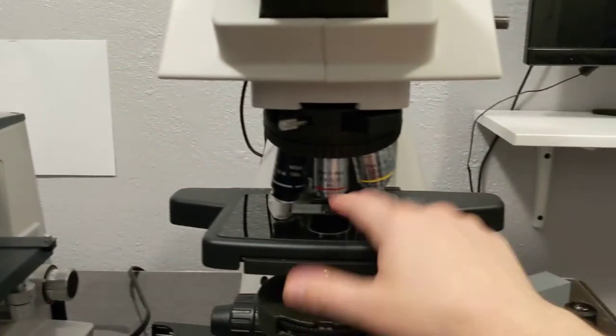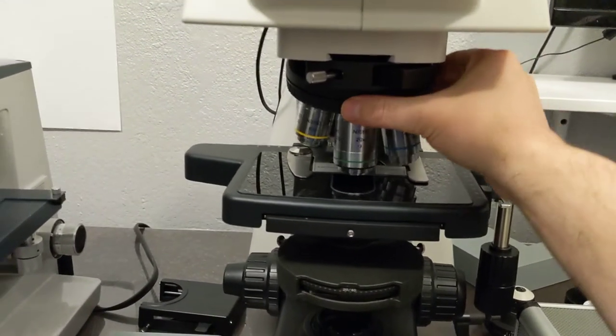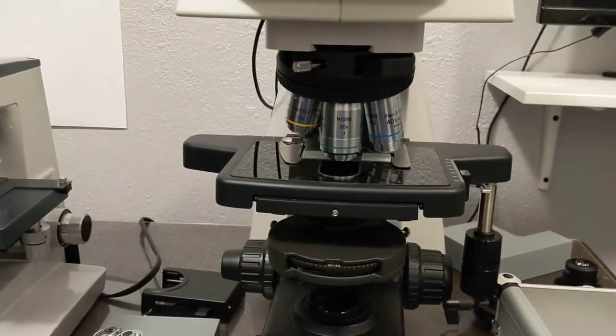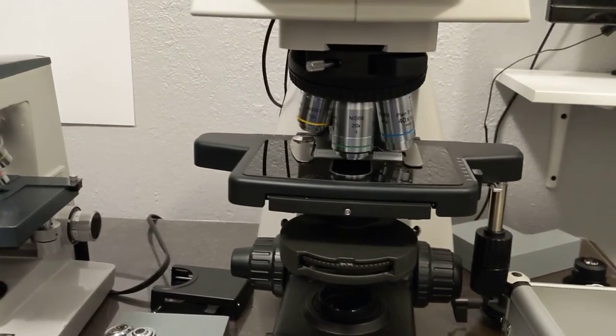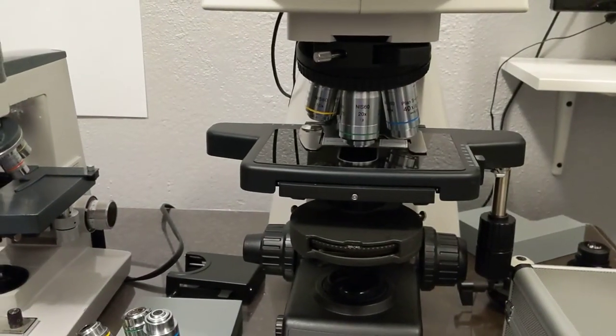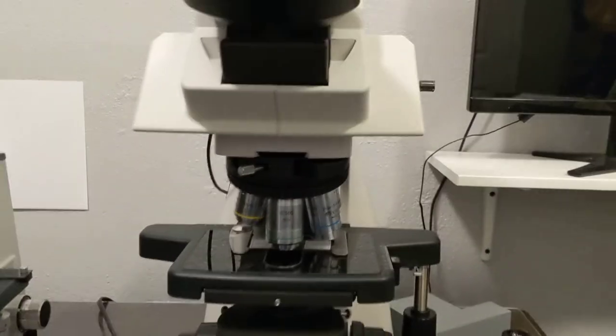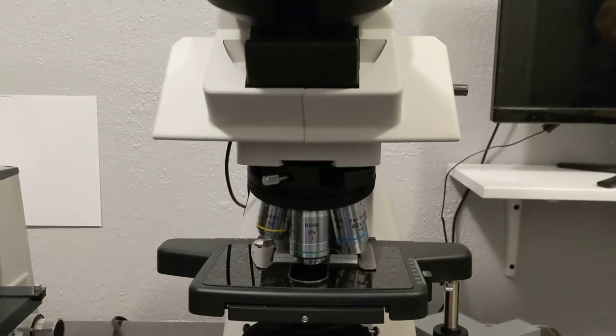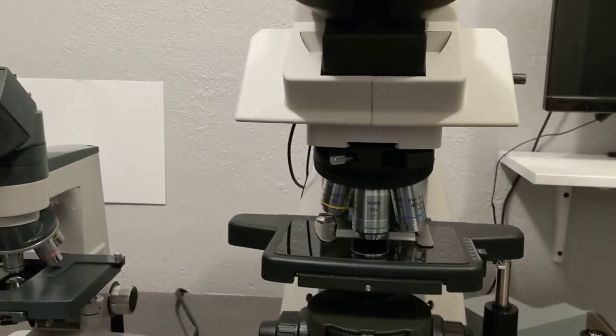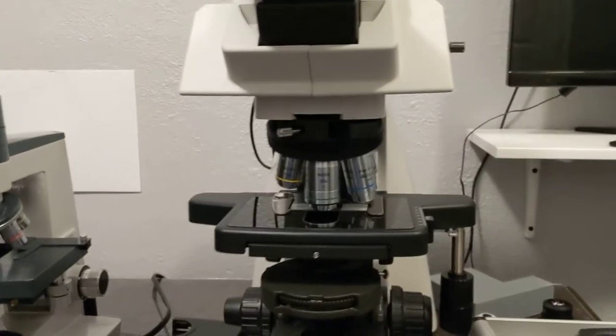This 20X Apo is a little bit custom made. If you look at it, it's wider than the other objectives. This is a six-position nosepiece, but they actually make a seven-position nosepiece. Originally, that's what I wanted, but it turns out that this 20X Apo is wide enough that it won't allow you to put objectives next to it if you get the seven-position.